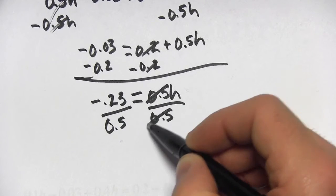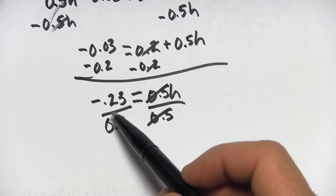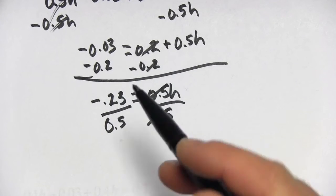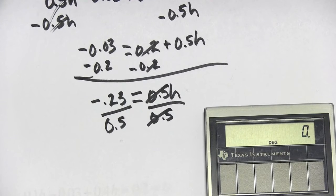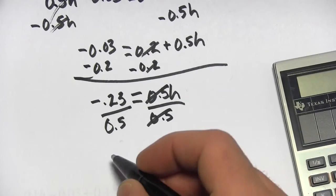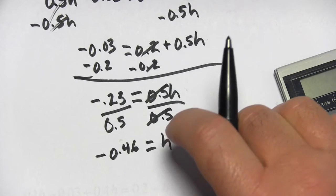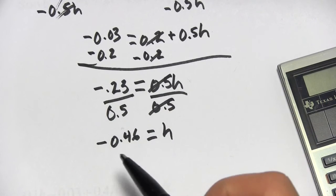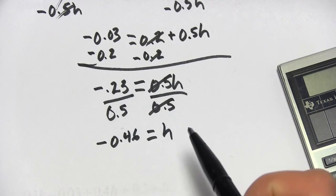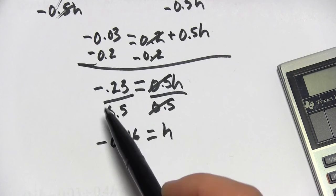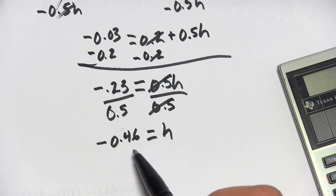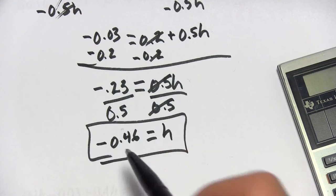Over here, you can think of the 0.5 as canceling out. And over here, we have a negative 0.23 divided by 0.5. If you want to use your calculator for that, you could certainly do that. Although, you could probably do this problem in your head. We'll divide by 0.5 and we get a negative 0.46. Now, dividing by 0.5 is the same thing as multiplying by 2. You divide by a half, you multiply by 2. So 0.23 times 2 is 0.46. And that's our value for h.